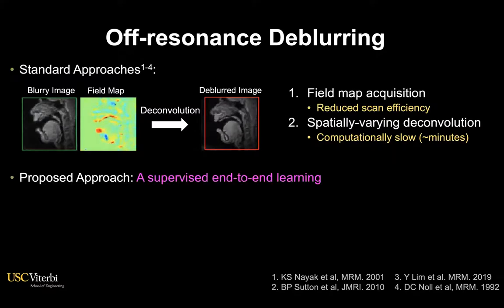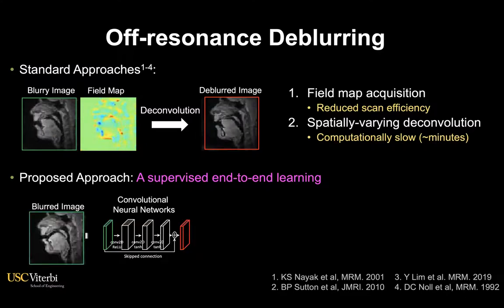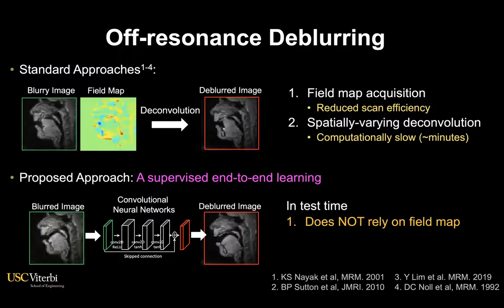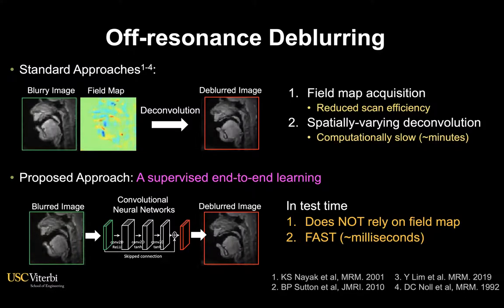Therefore, in this work, we propose a supervised learning method that utilizes a compact three-layered CNN architecture. Once it is trained, it does not require explicit knowledge of the field map and can perform deblurring within a few milliseconds.